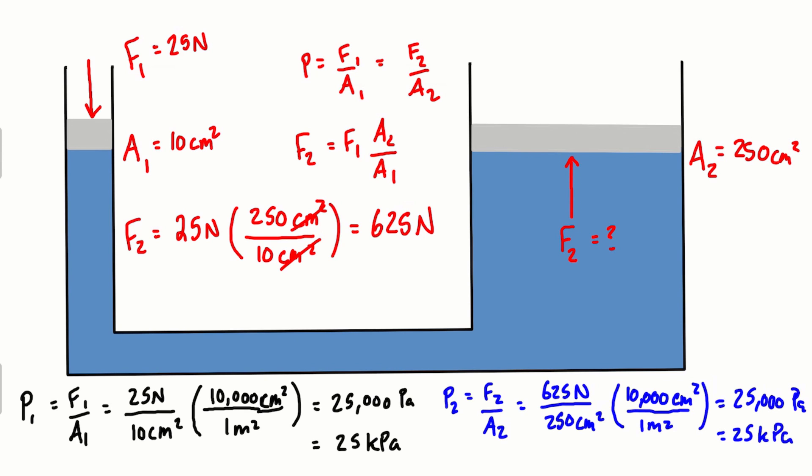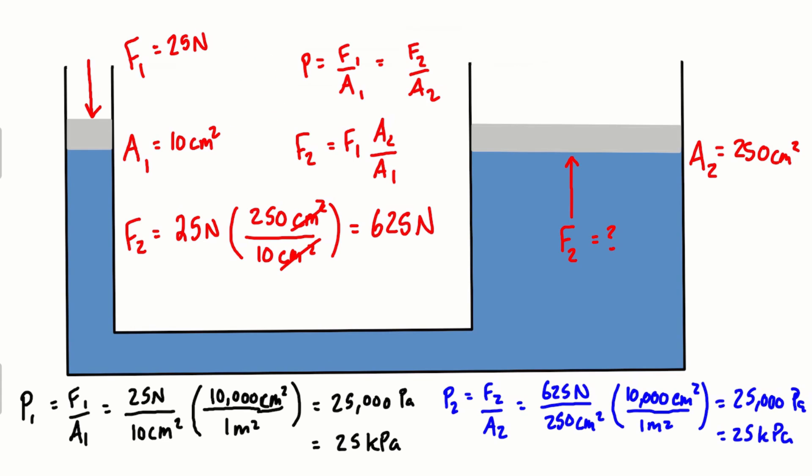So at this level of height in the fluid column, assuming they're at the same, we have transmitted basically 25 kilopascals all through the fluid and back up to this point. And that's why we're getting 25 kilopascals pressing up, which divided by the area gives us this force of 625 newtons, which is much greater than the applied force that we have to write.